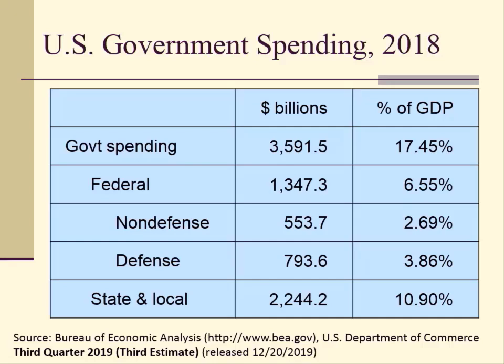Government spending divides into federal and state/local categories. Federal spending was $1.3473 trillion (6.55% of GDP), divided into non-defense at $553.7 billion (2.69% of GDP) and defense at $793.6 billion (3.86% of GDP). State and local government spending was approximately $2.2442 trillion, equal to 10.90% of GDP in 2018.